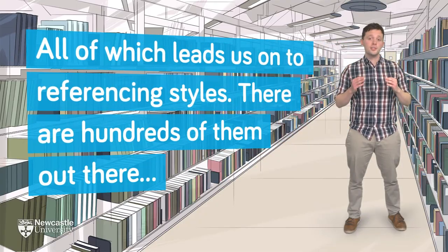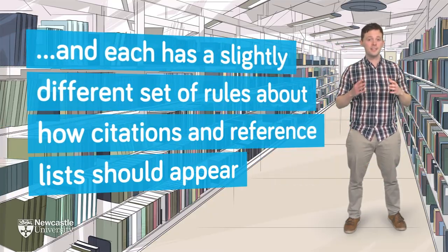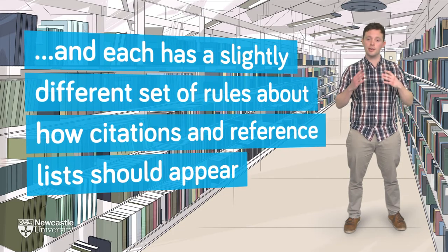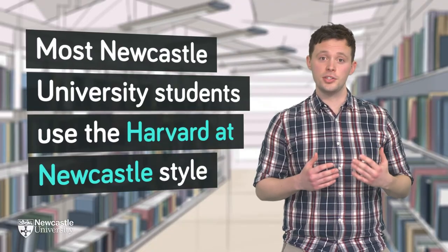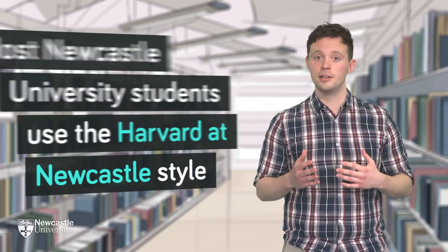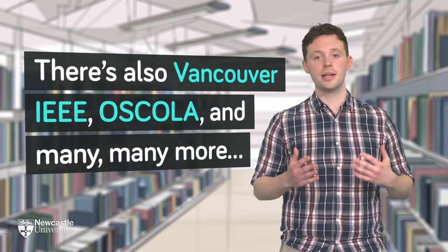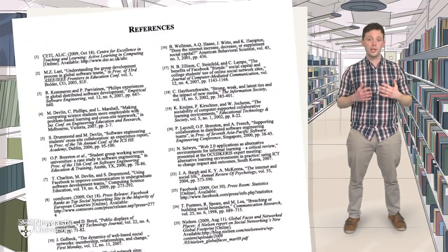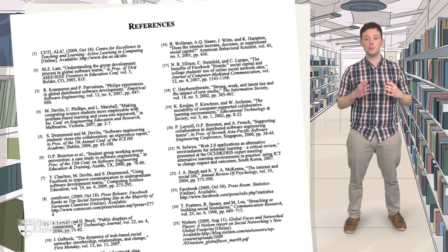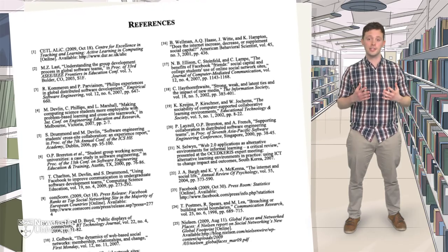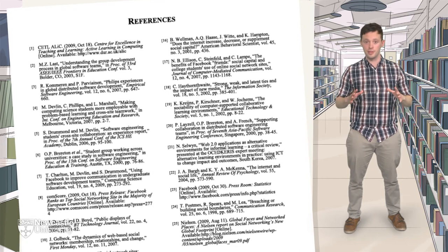All of which leads us on to referencing styles. There are hundreds of them out there, and each has a slightly different set of rules about how citations and reference lists should appear in your text. Most Newcastle University students use the Harvard at Newcastle style, but there's also Vancouver, IEEE or Scola, and many, many more. Your lecturers will expect you to use one specific type, and all your citations and references should match that style accurately and consistently — same punctuation, same capitalization, same everything.